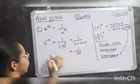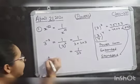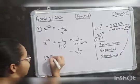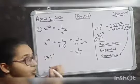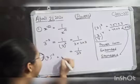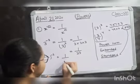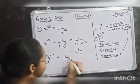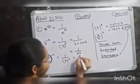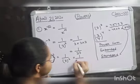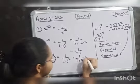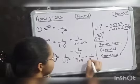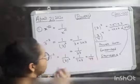Similarly, 7 raised to the power minus 2 gives you 1 upon 7 raised to the power 2, which equals 1 upon 7 multiplied by 7, which is equal to 1 upon 49.